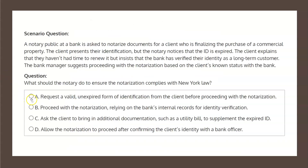With this in mind, let's have a look at our four choices to determine the solution. Choice A states: request a valid, unexpired form of identification from the client before proceeding with the notarization. This aligns with the law that we read, but before we mark it as the correct solution, let's have a look at the other three choices just to be certain.